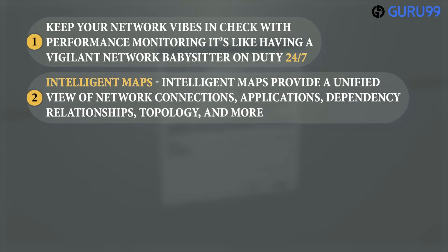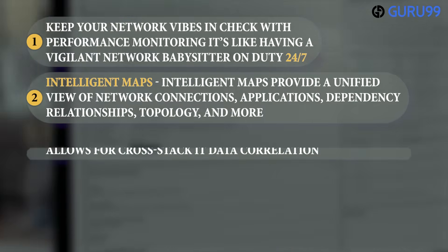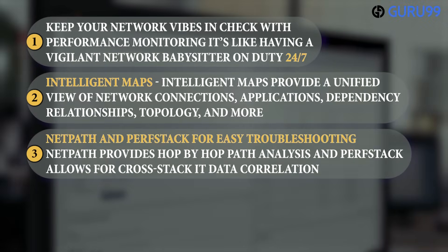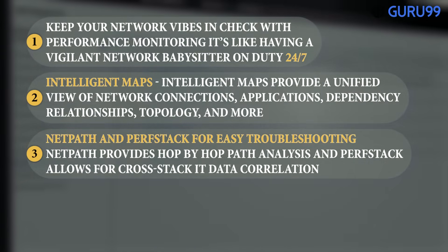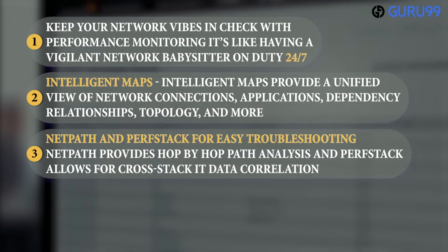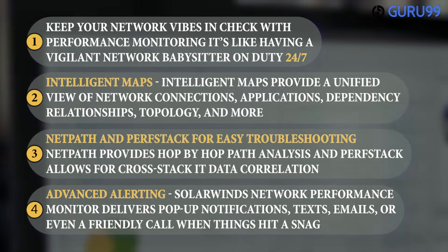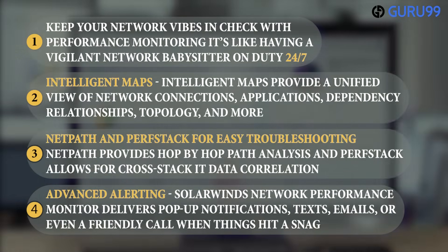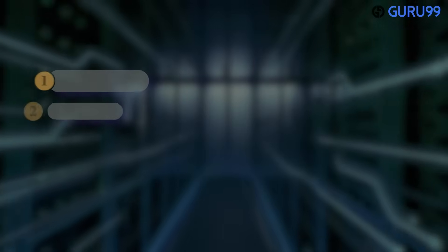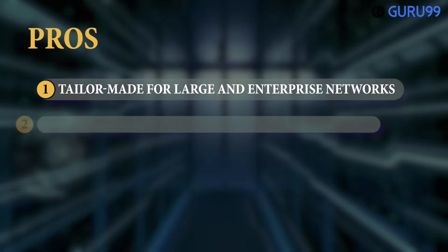Intelligent maps provide a unified view of network connections, application dependency relationships, topology, and more. NetPath provides hop-by-hop path analysis, and PerfStack allows for cross-stack IT data correlation. Advanced alerting delivers pop-up notifications, texts, emails, or even a call when things hit a snag. Supported platforms: Windows and Linux.